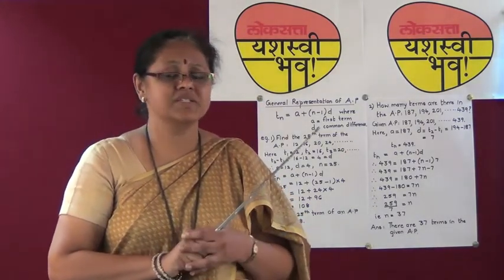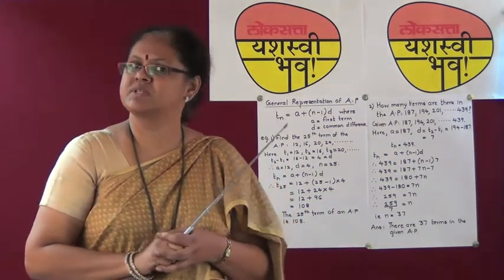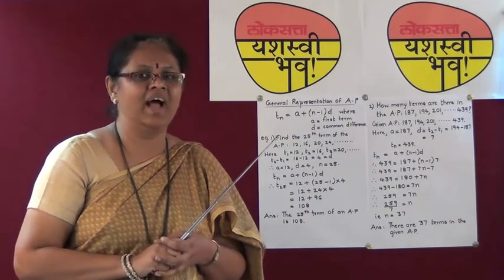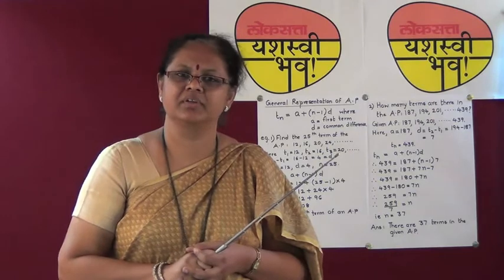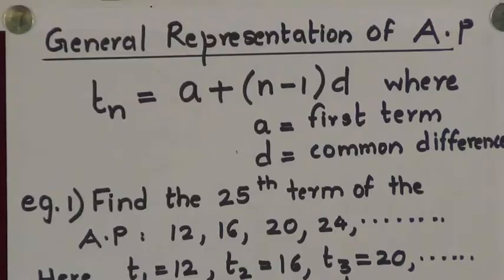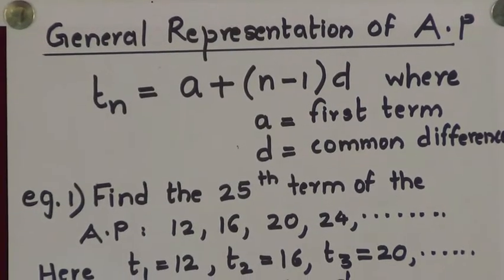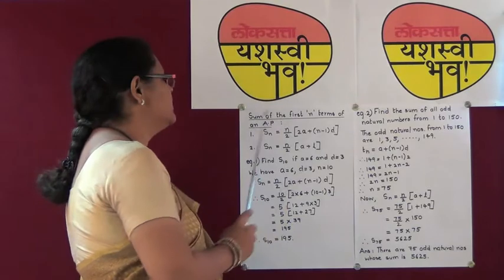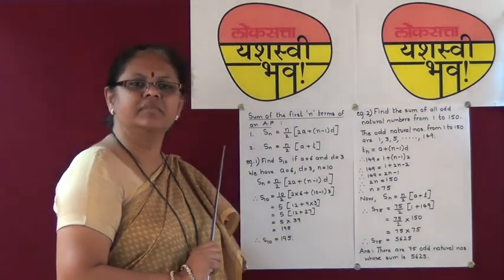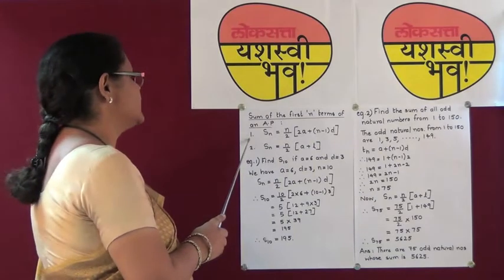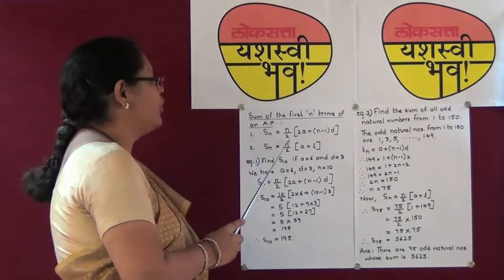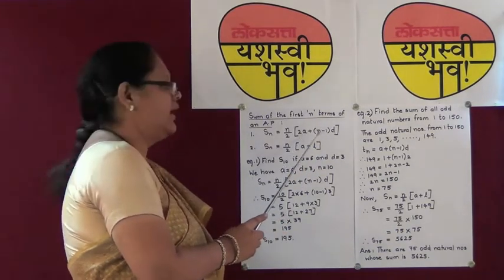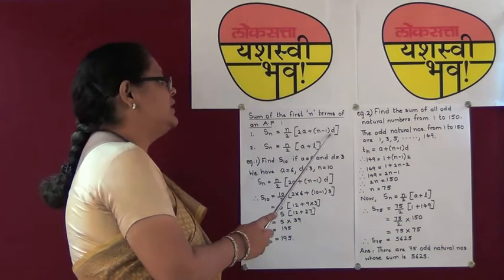So children, what have we seen up till now? We have seen first what is the sequence, what is the progression, the types of progression, then what is an arithmetic progression, and now the general representation of arithmetic progression. Let us now see the sum of the first N terms of an arithmetic progression.